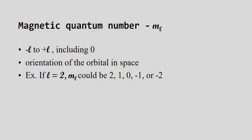The magnetic quantum number is the third quantum number. It goes from negative L to positive L, and its symbol is M sub L. M sub L tells us the orientation of the orbital in space — basically which orbital it's in. So if our L value is two, our magnetic quantum numbers could be negative two, negative one, zero, one, two — identifying each of our five D orbitals.